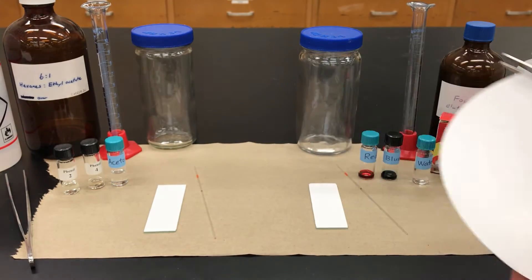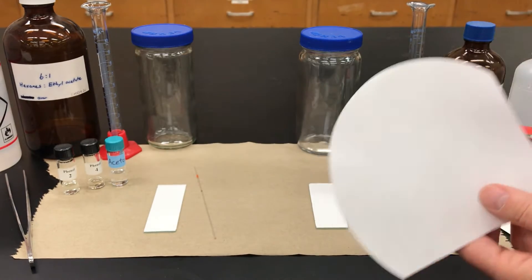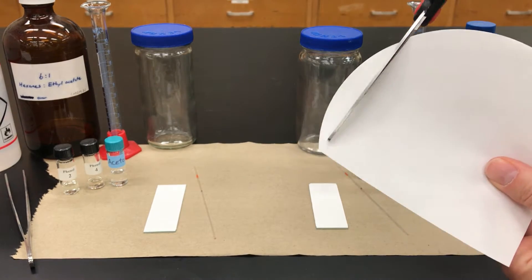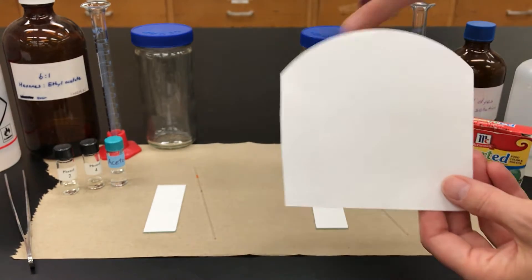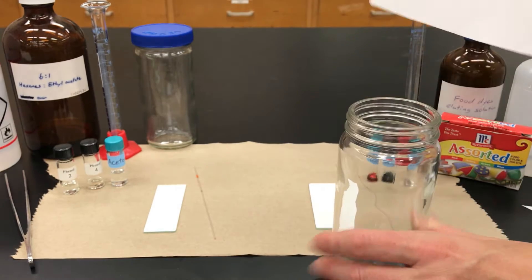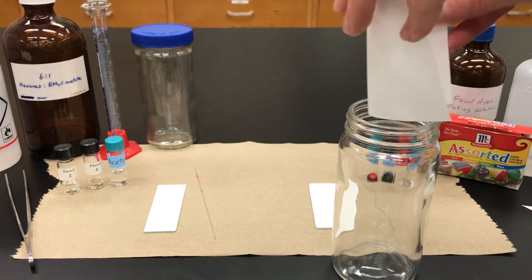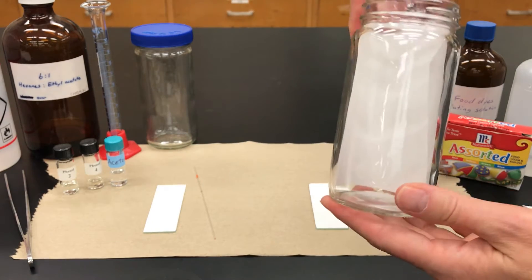I'm going to first start by setting up my TLC chamber, which we put a piece of filter paper in. Take some filter paper and cut it to size, cutting a few of the sides off will help you be able to see better. Stick that inside of a screw cap jar with a lid and push it down to the bottom.